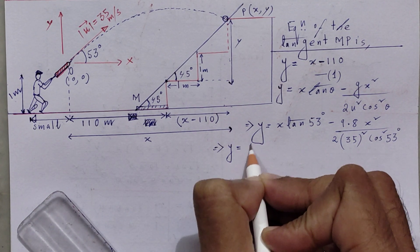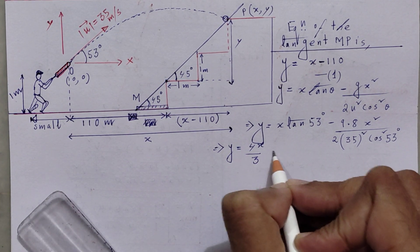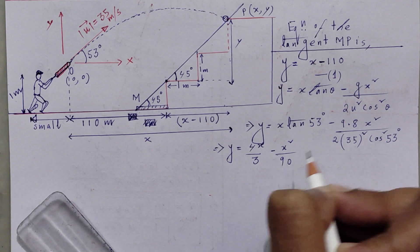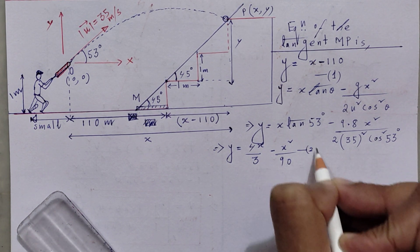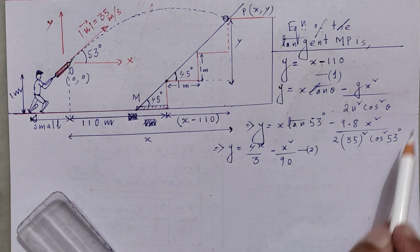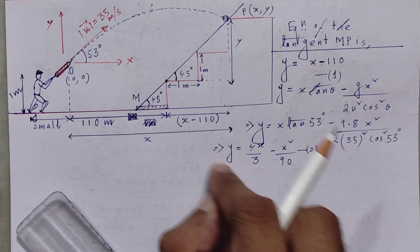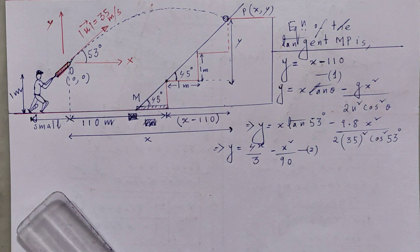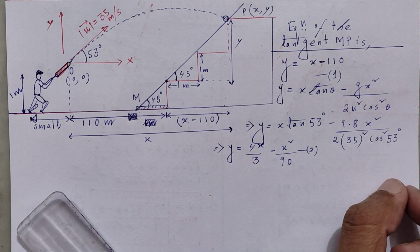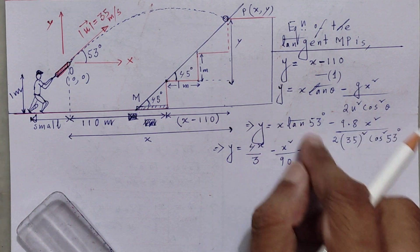After simplification, the trajectory equation becomes: y = 4x/3 − x²/90. This is equation 2. Please work through the simplification yourself — using tan 53° = 4/3 and cancelling the appropriate terms — to verify this result.